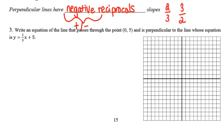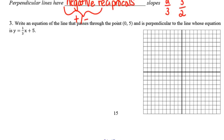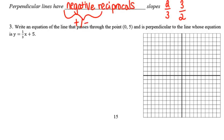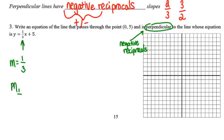In number three, write an equation of the line that passes through the point (0, 5) and is perpendicular to the line with the equation y equals one-third x plus 5. Since this line is going to be perpendicular to the given line, I know automatically that the slopes have to be negative reciprocals. The first thing I'm going to do is find the slope of my original line. The slope of my original line is one-third. The slope of a line perpendicular, because this guy was a positive one-third, his negative reciprocal is going to be negative 3 over 1.